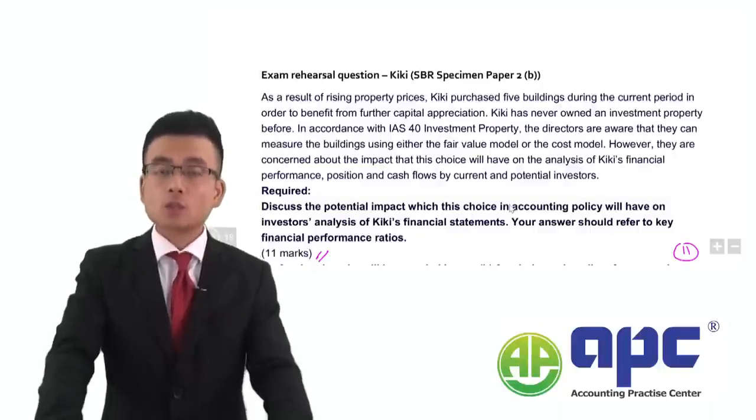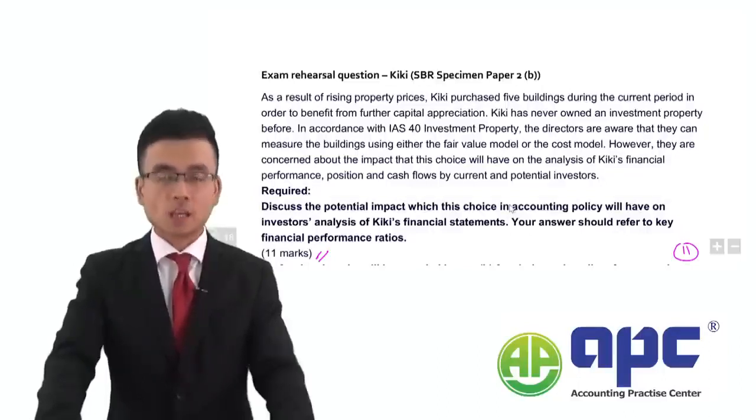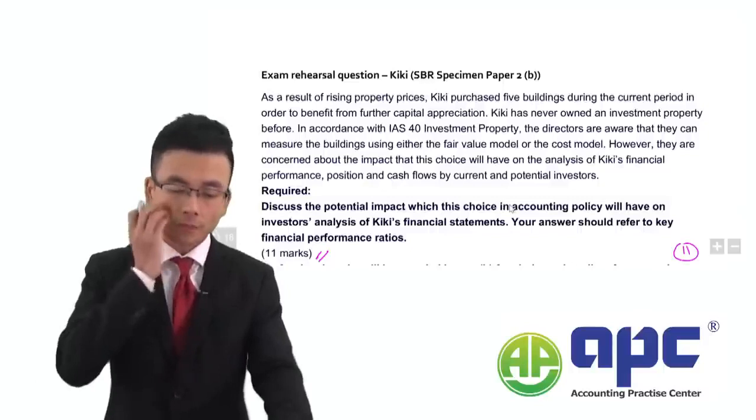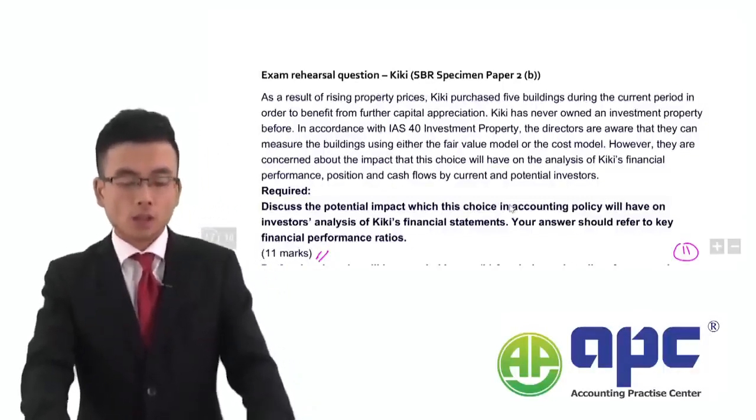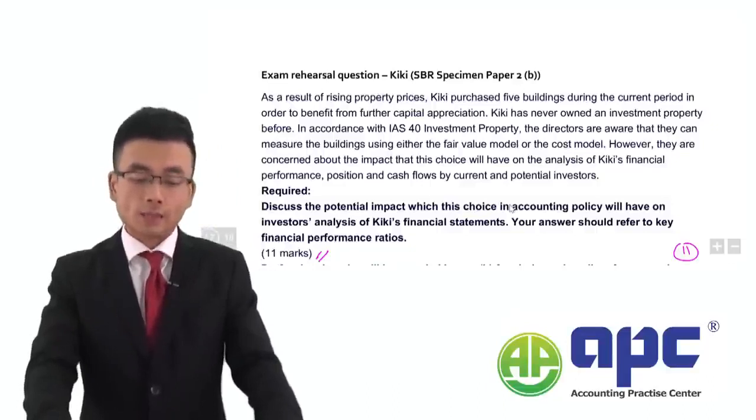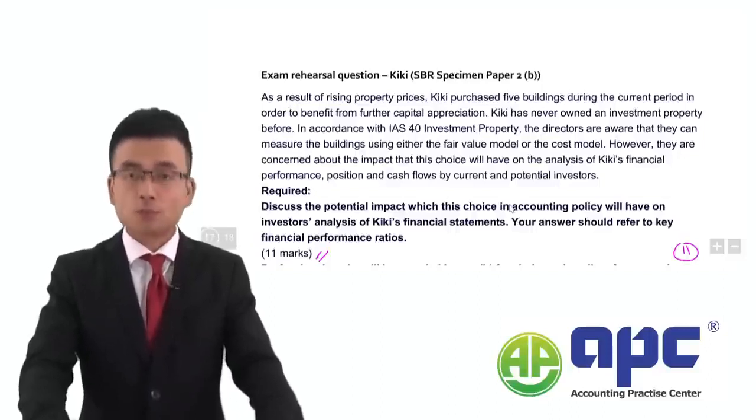In other words, your answer should primarily focus on, from the investor's point of view, of how the investment property would have impact on the P&L, SFP and statement of cash flows. Required, discuss the potential impact which this choice in accounting policy will have on investors' analysis of the financial statement. Your answer should refer to key financial performance ratios.